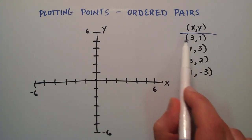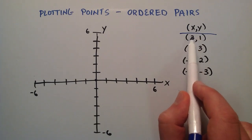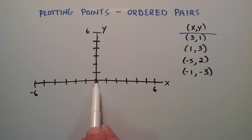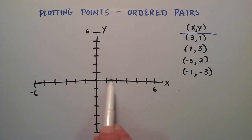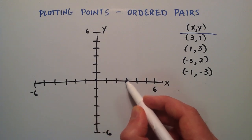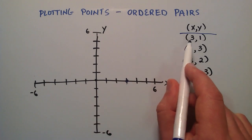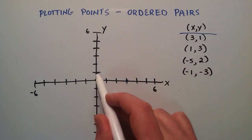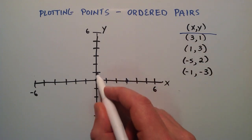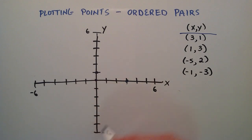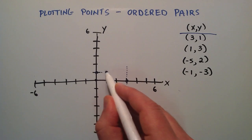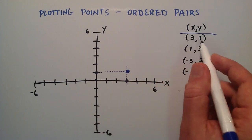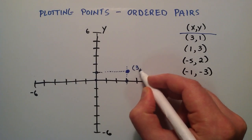Let's look at our first point. Our first point is the ordered pair 3, 1. So 3 is in the X position — on our X axis we start at 0, which is the origin, and we go over 3 units in the X direction. That's our X component of this point. Our Y component is 1, so we start at the origin and go up 1 unit in the Y direction. Then we just draw our projections off of those two components, and where those projections cross is the point represented by the ordered pair 3, 1.